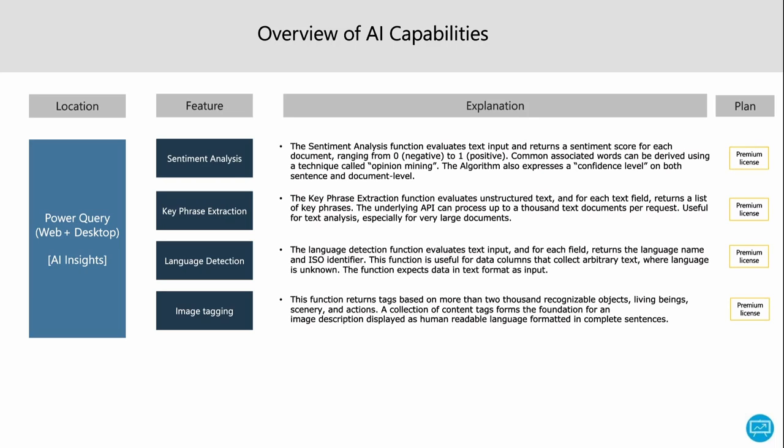So what are these? Sentiment analysis analyzes a text document and returns a score from 1 to 0 — 1 being a positive sentiment, 0 being a negative sentiment. Key phrase extraction is for when you have a large document and you want to find out which phrases keep on returning. You can use that functionality.